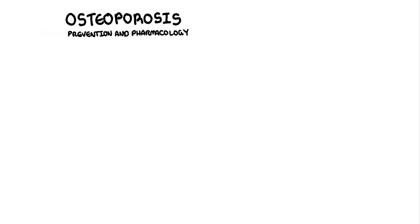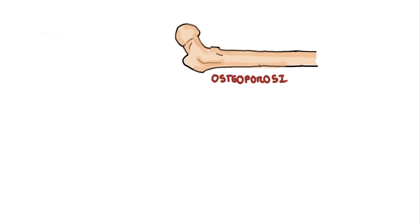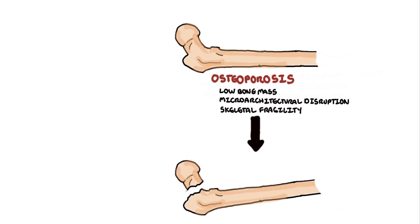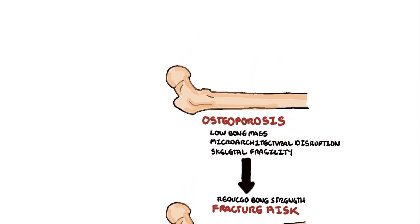In this video we're going to talk about osteoporosis management, focusing on the pharmacology. Osteoporosis is where you have low bone mass with microarchitecture disruption and skeletal fragility. This results in a reduced bone strength and an increased risk of fracture. Osteoporosis is asymptomatic until a fracture occurs.